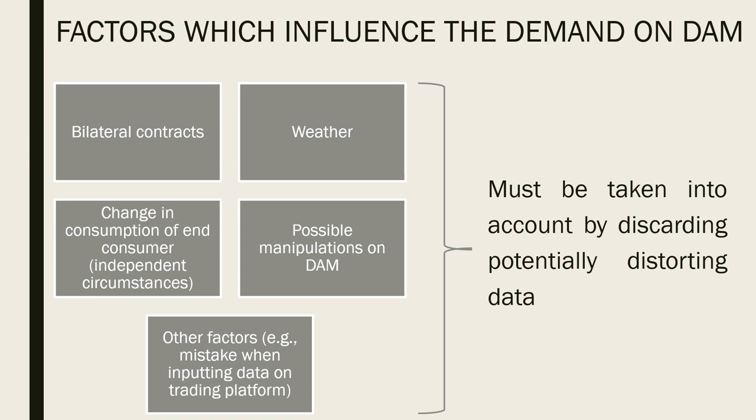Change in consumption of end consumer, for example independent circumstances. Today we live in difficult times. We have war and everything can happen to our end consumer. Electricity lines can be destroyed, so this cannot be forecasted. Possible manipulations on the ahead market. If some player on the market has too much power, this player can use this power for his own benefit. Other factors, for example mistake when inputting data on trading platform. Sometimes some company may make mistake when inputting price and volume.